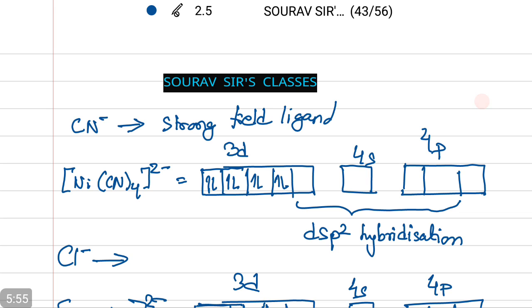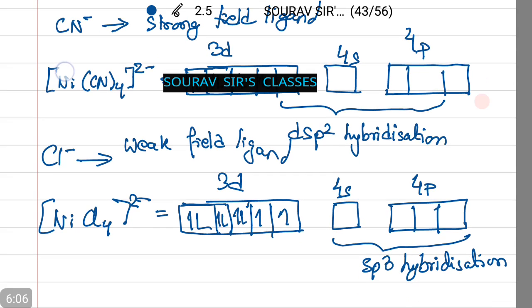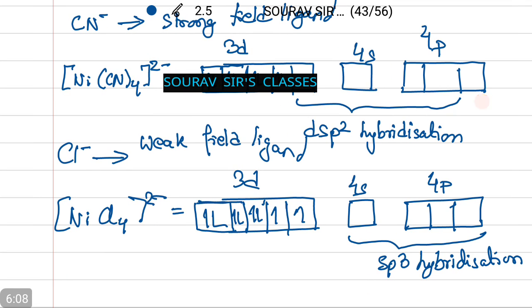Whereas, on the other hand, chlorine being a weak field ligand is incapable of pairing of nickel unpaired electrons. Hence, nickel chloride is paramagnetic complex with two unpaired electrons that gives its paramagnetic character with sp³ hybridization.